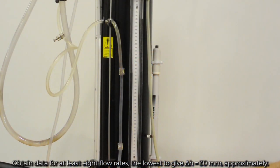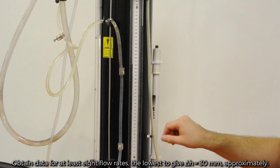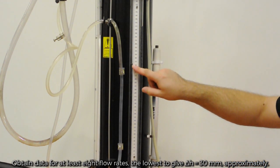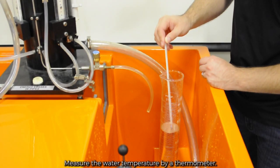Obtain data for at least eight flow rates, the lowest to give delta H equals 30 millimeters approximately. Measure the water temperature by a thermometer.